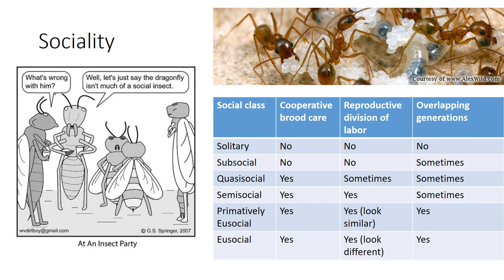First, there is a division of labor with a caste system involving sterile or non-reproductive individuals assisting those that reproduce. Second, there is cooperation among colony members in tending the young. Third, there is an overlap of generations capable of contributing to the colony functioning.